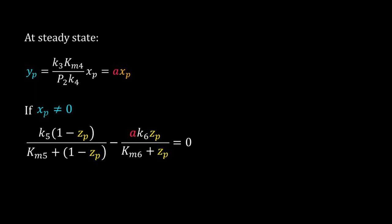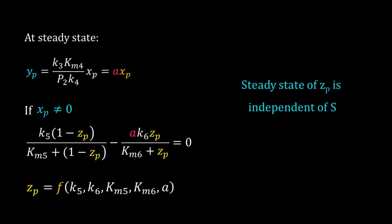So the steady state of zp is equal to a function similar to the Goldbeter-Koshland function. It is a function of k5, k6, km5, km6, and a. So the steady state of zp is independent of S, X, and Y.